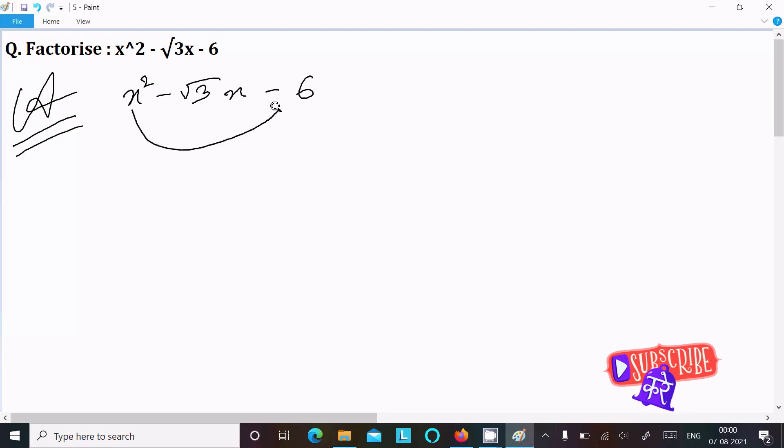First we need to multiply the first term with the last term: x² times -6 equals -6x². Then take the middle term √3x.